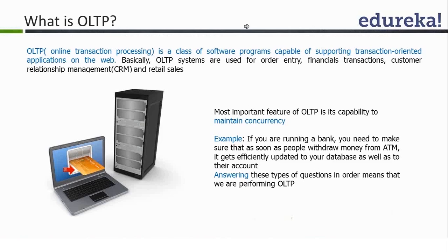Examples of OLTP transaction systems include Flipkart.com and Amazon.com, which are also transaction systems, as well as ERP systems. Wherever you are doing a transaction — for example, if you go to a shopping mall, pay the bill, and they give you a receipt — that is also a transaction system. These are a few examples of transaction processing.